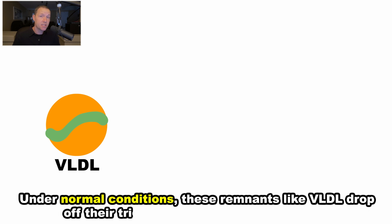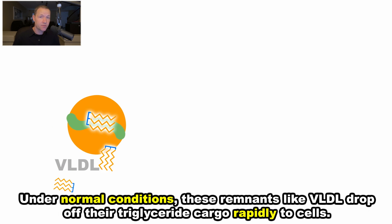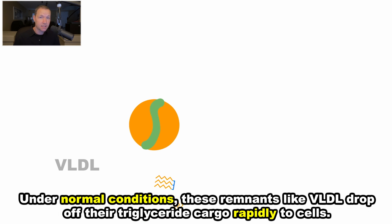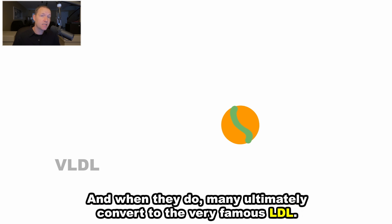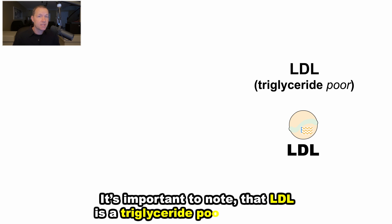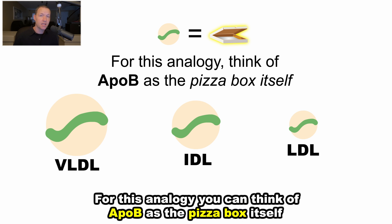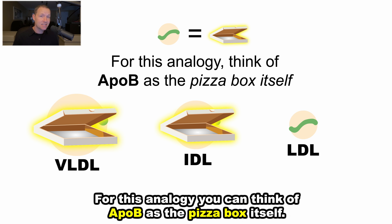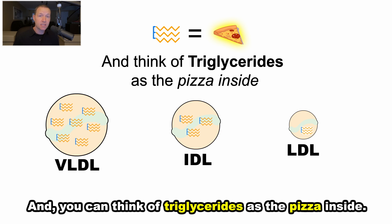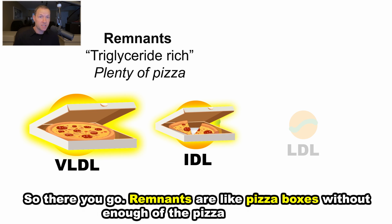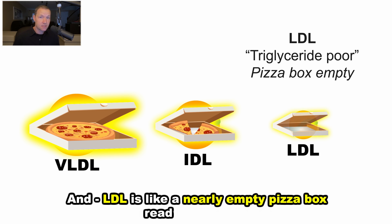Under normal conditions, these remnants — like VLDL — drop off their triglyceride cargo rapidly to cells. And when they do, many ultimately convert to the very famous LDL. It's important to note that LDL is a triglyceride-poor lipoprotein. For this analogy, you can think of ApoB as the pizza box itself, and you can think of triglycerides as the pizza inside. So remnants are like pizza boxes without enough of the pizza taken out, and LDL is like a nearly empty pizza box ready to recycle.